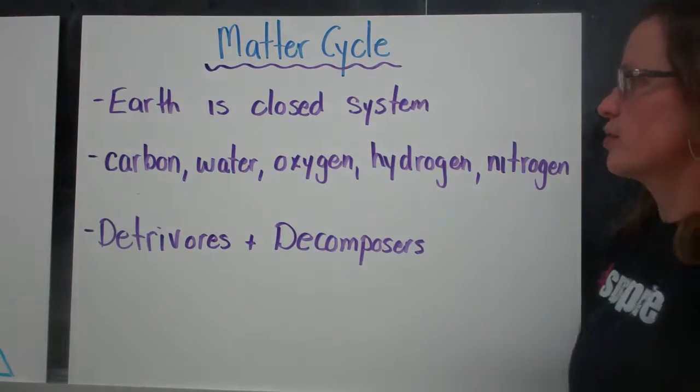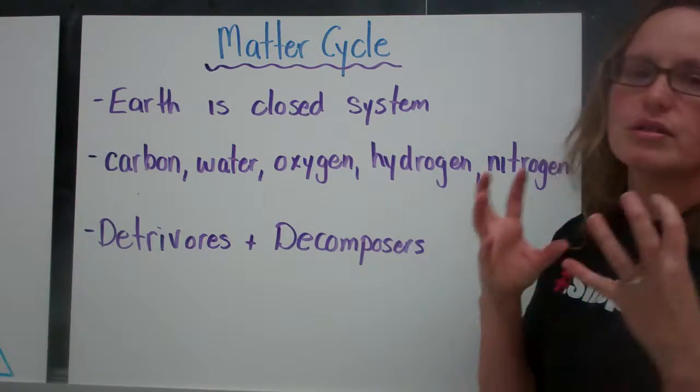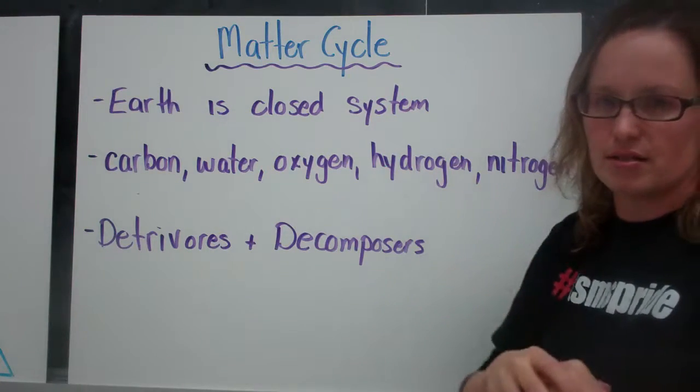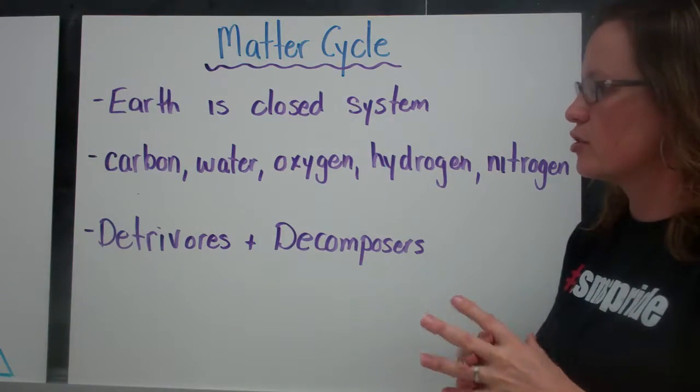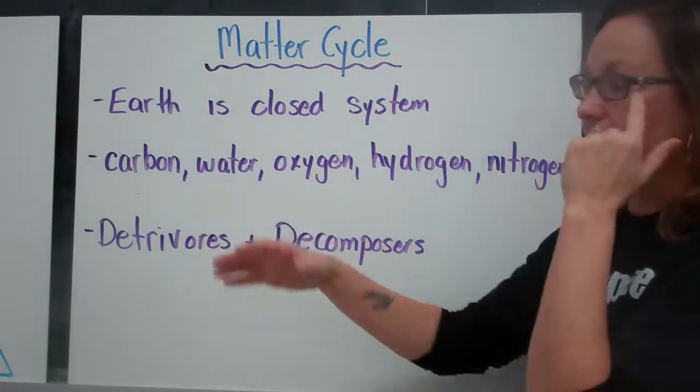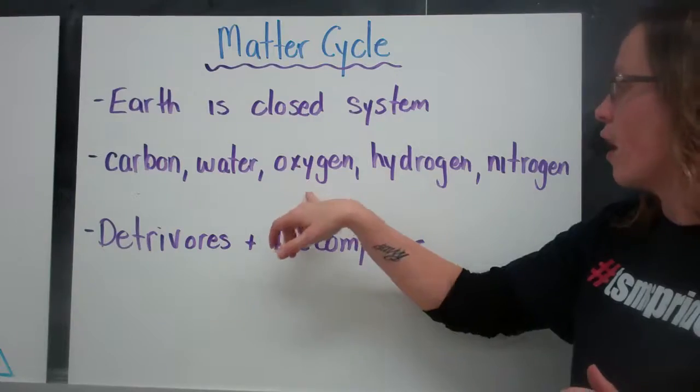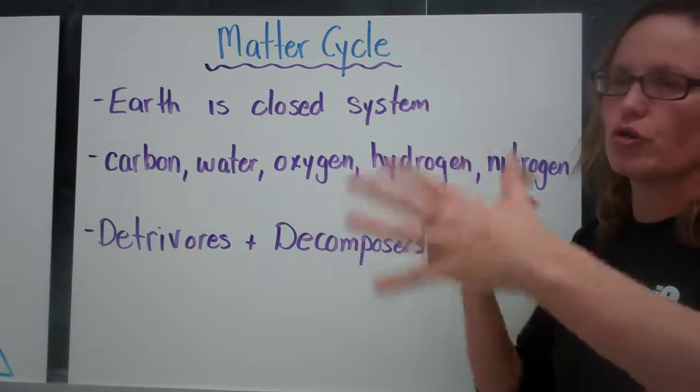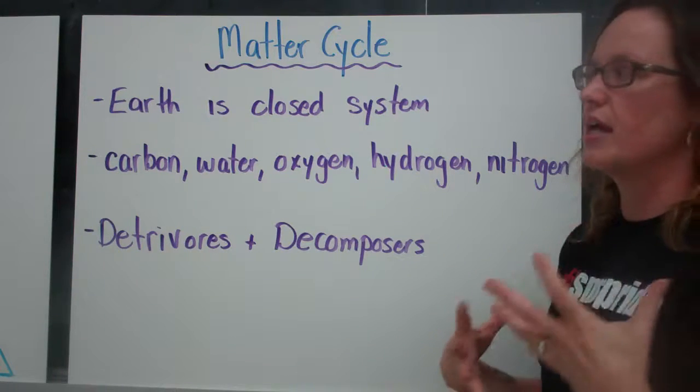And the matter cycle. So the earth is a closed system, which means there isn't anything added to our system and nothing leaves our system. So we maintain our carbon, water, oxygen, hydrogen, and nitrogen levels naturally through a natural sort of recycling system within our environment.